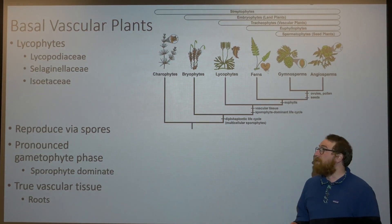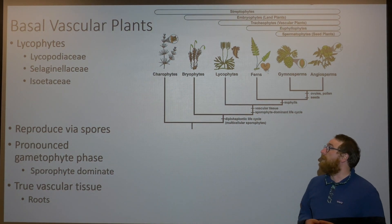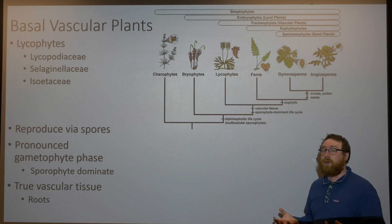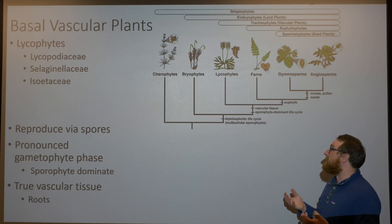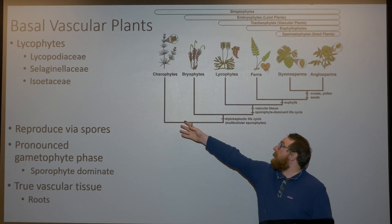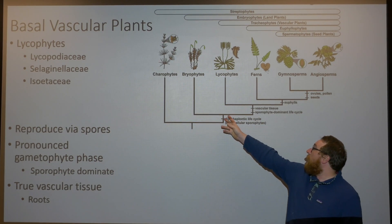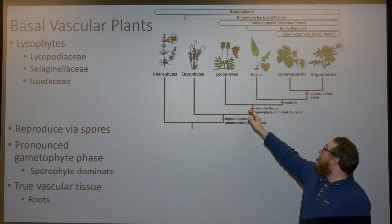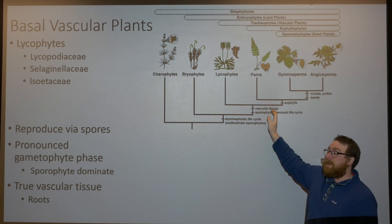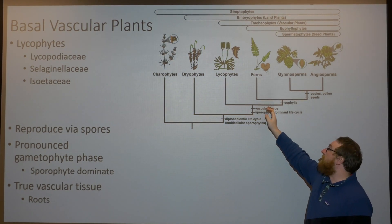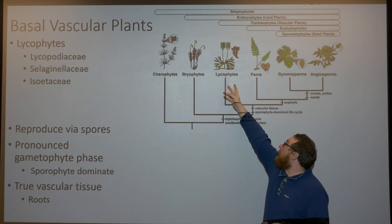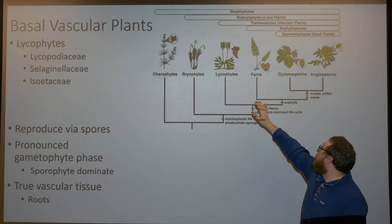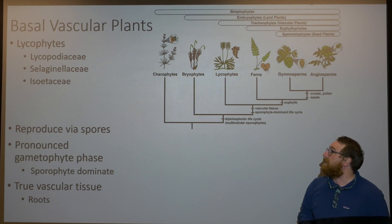Lycophytes are part of the big group known as the basal vascular plants. They're our first group that's going to have true vascular tissue. Starting from green algae, we get bryophytes, and now with lycophytes we're adding a sporophyte-dominant lifecycle stage as well as vascular tissue. This is a really big group that's sister to the rest of the plants.